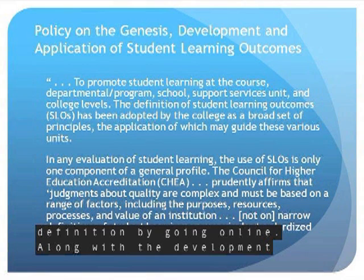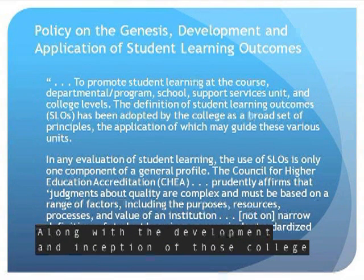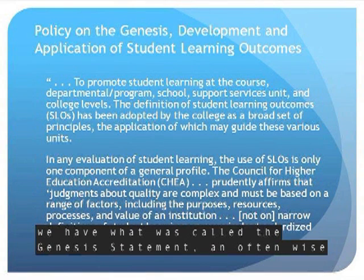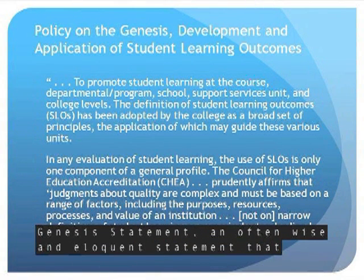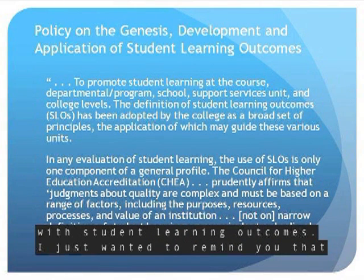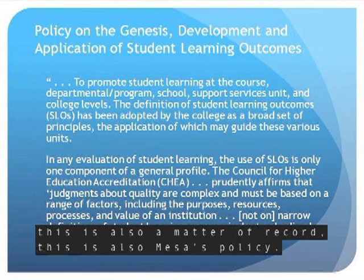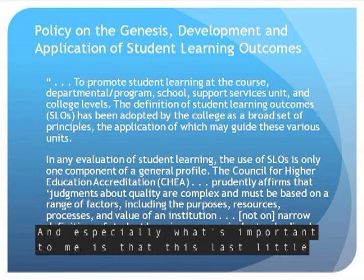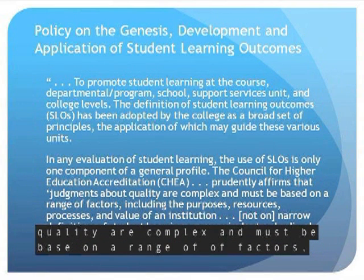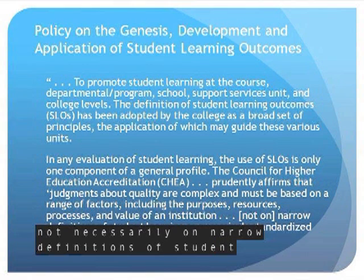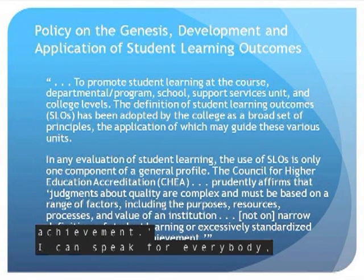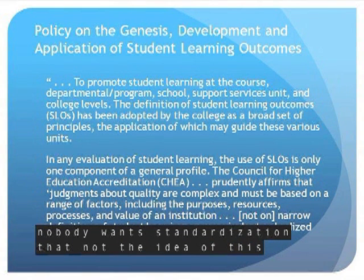Along with the development and inception of those college institutional outcomes, we have what was called the Genesis Statement — a wise and eloquent statement that talked about Mesa's philosophy with student learning outcomes. I wanted to remind you that this is a matter of record and Mesa's policy. What's especially important is this last quotation: judgments about quality are complex and must be based on a range of factors, not on narrow definitions of student learning or excessively standardized measures of student achievement. Nobody wants standardization — that's not the idea of this whole enterprise.